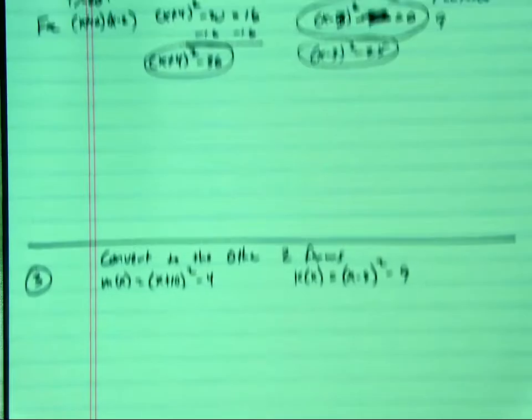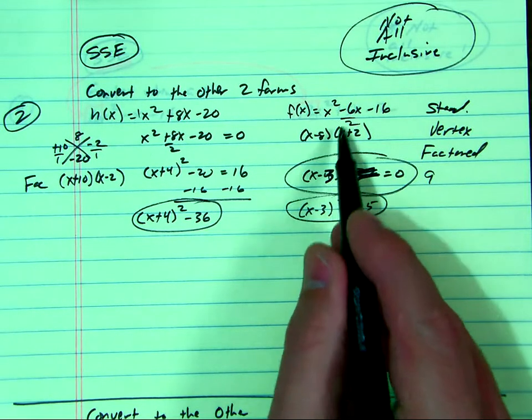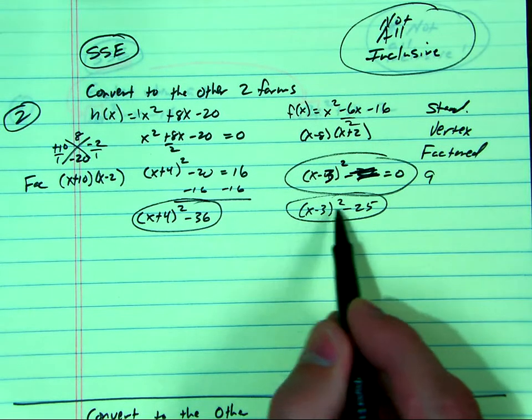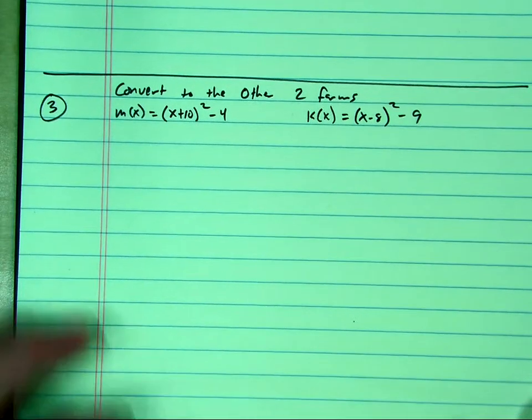Okay, video number three for SSE. By the way, a student was kind enough to catch an error. I divided the 8 by 2, but it's actually supposed to be negative 6 divided by 2. So that's the correct answer for the previous video. Sorry, I'm still coughing.